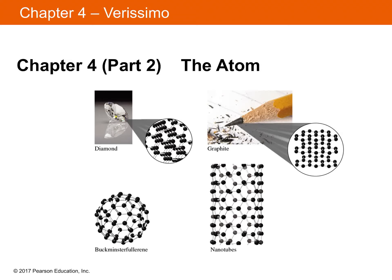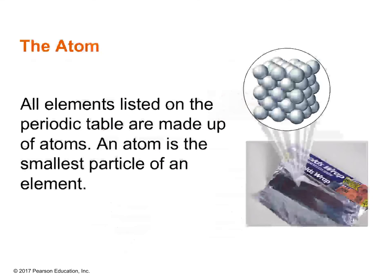For Part 2, today we are going to talk all about the atom. We left off last time talking about the periodic table, and we learned that it used to be arranged by Dmitri Mendeleev by increasing atomic mass, but it's now arranged by increasing atomic number. And the atomic number will tell us a lot about the atom. So today we're going to start looking at the structure of the atom, the history of the atom, and all kinds of good stuff.